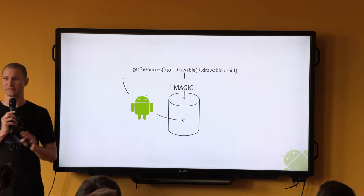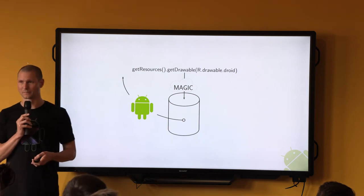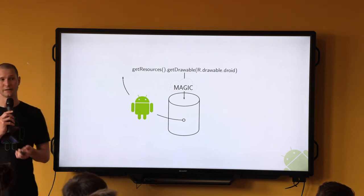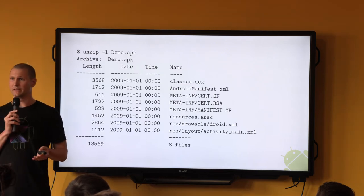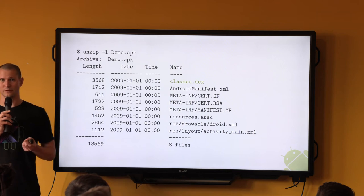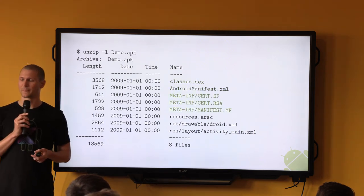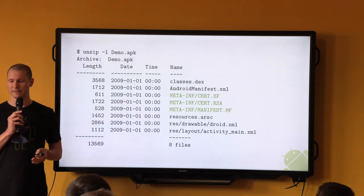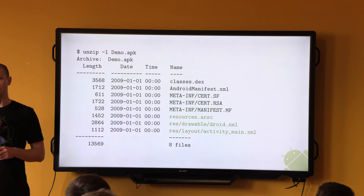But first, we need to have a discussion on the very foundations of resources. Let's start by looking at a final APK file. An APK is just a zip file. There's your compiled bytecode, the manifest, some metadata about the application including the signature, and of course resources.